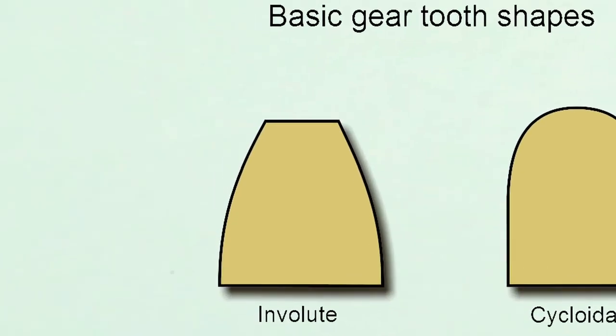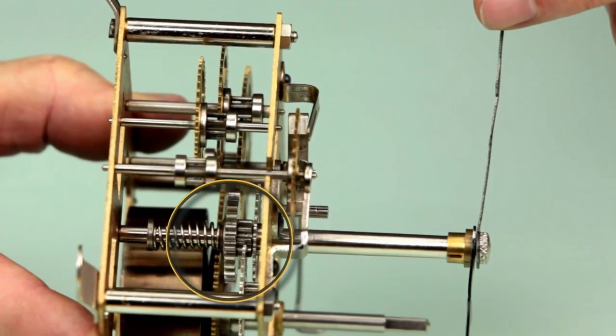This is an involute tooth profile. Notice the sloping sides and the squared off top. This is the profile used in most modern machinery today. In clocks, you'll often find involute gears in the motion works, where a smaller pinion drives a larger gear, and rotational speed is reduced rather than increased. We'll discuss this more in detail when we get to the motion works.